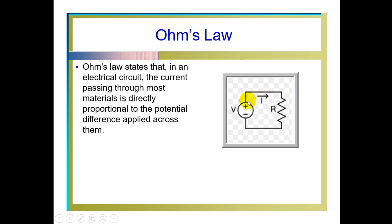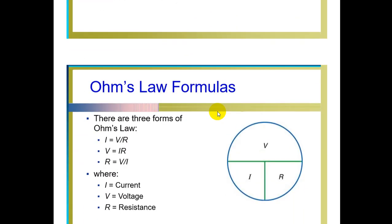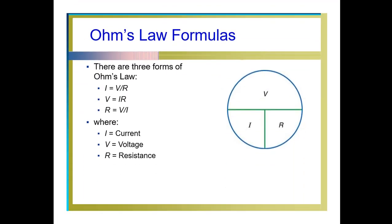We can see there is one diagram for Ohm's law. We are applying voltage across the resistance and current is flowing. So there are three forms of Ohm's law. Using this diagram, you can calculate the unknown parameters among the three parameters which we are seeing in the diagram.